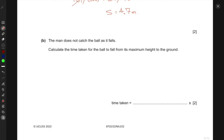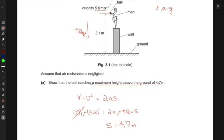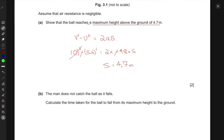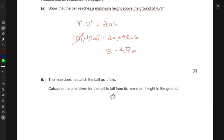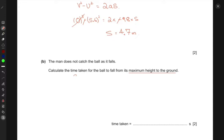Now they say that the man does not catch the ball as it falls. And you can see that it would then fall below, cover this height of 3.1 meters to the ground. Calculate the time taken for the ball to fall from its maximum height to the ground. So what is the maximum height? s, 4.7 meters. We want to find the time t. We know that we have acceleration in this statement as well, which is acceleration due to gravity. So we know an equation that will work and give us the time, which is s equals to ut plus half at squared.